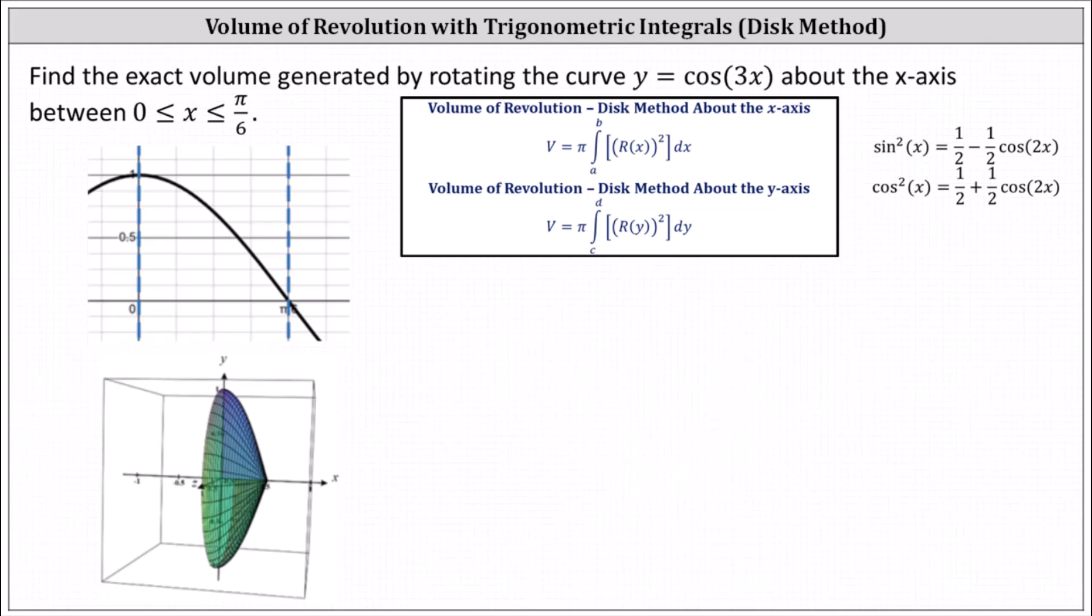Find the exact volume generated by rotating the curve y equals cosine 3x about the x-axis between 0 and pi divided by 6. This indicates we're rotating this bounded region here about the x-axis, which forms the solid shown below. Our goal is to find the volume of this solid.